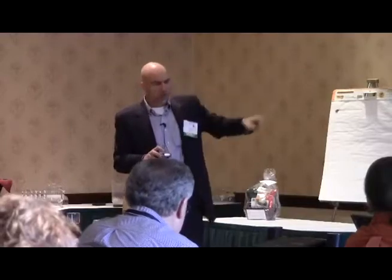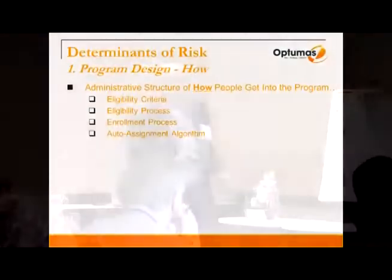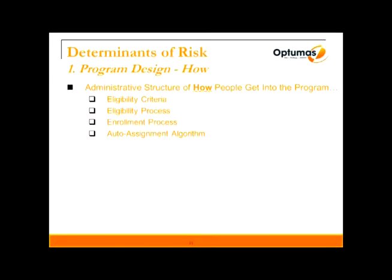We're going to go through each one of these four. The first determinant is 'how' — the simplest way to think of it is the eligibility process. How does someone become eligible for the family care program?